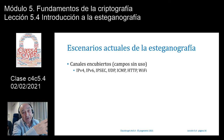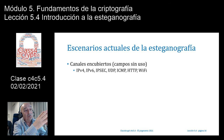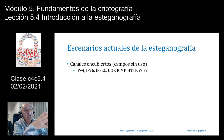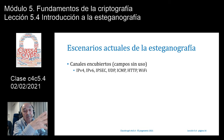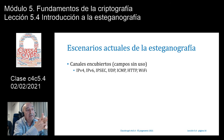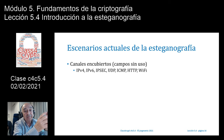En cuanto a la esteganografía digital en entornos actuales, existen canales encubiertos en protocolos de red como IP versión 4, IP versión 6, IPsec, UDP, ICMP, HTTP y WiFi, donde hay campos sin uso reservados para futuras actualizaciones o que simplemente nunca se han utilizado. Quien conozca esa tecnología puede introducir información en esos campos, y dado que el protocolo normalmente no los procesa, esa información pasa desapercibida.